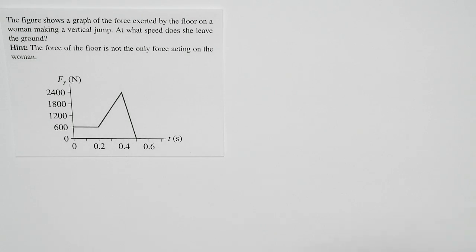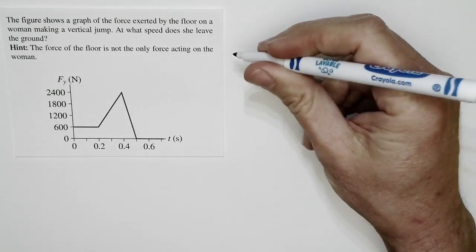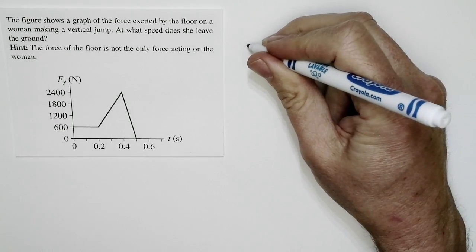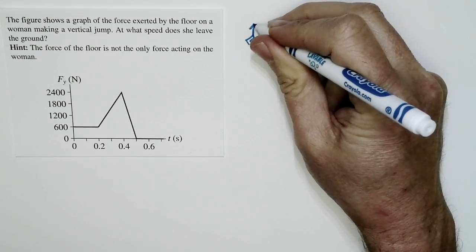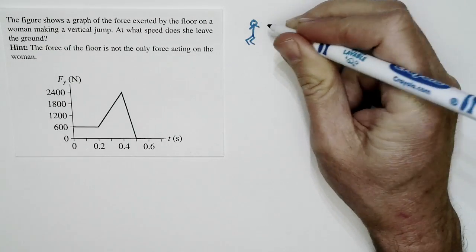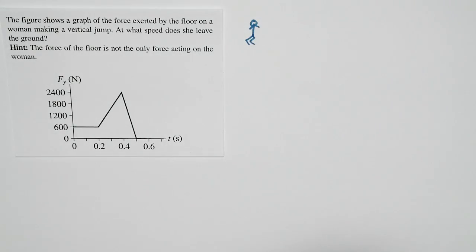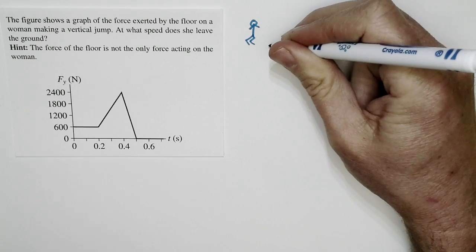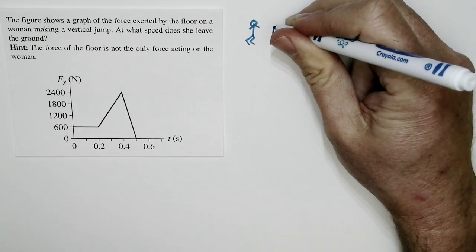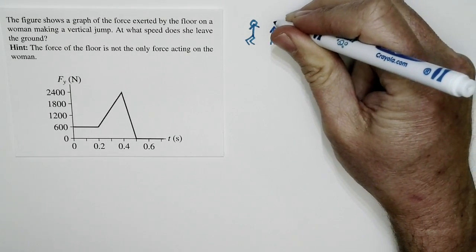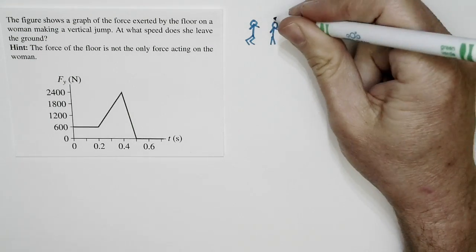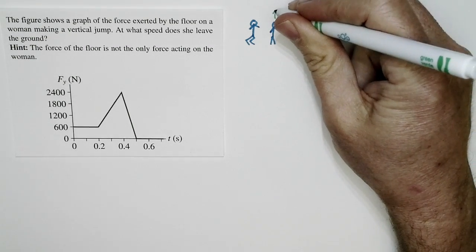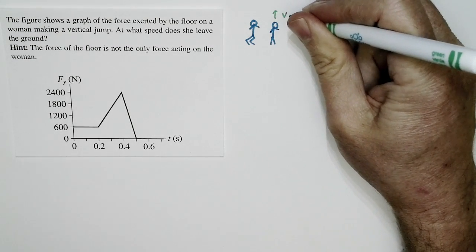Let's take a look at this problem. We have a woman who's jumping off the ground. She's in a crouch, then she pushes down. As a consequence, the floor pushes upward on her, and at some point she ends up leaving the ground moving upward at some speed. That's what we're trying to figure out in this problem.